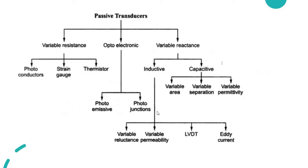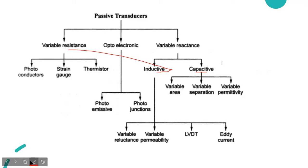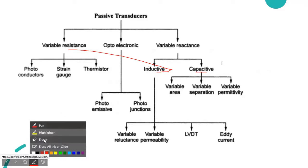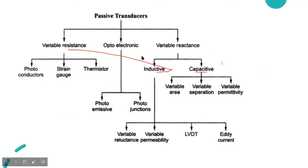The broad classification of passive transducers is as shown in the screen diagram, where either the resistance, inductance, or capacitance is varied. The rest of the classification is shown here.